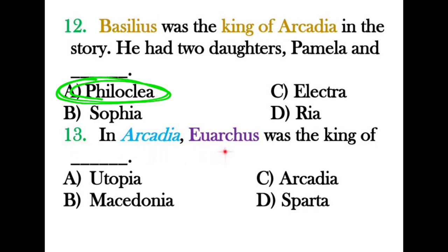Question thirteen: In Arcadia, Euarchus was the king of which place? The options include Utopia, Arcadia, Macedonia, and Sparta. Utopia was no real historical place — just an imaginary concept — and Basilius was already the king of Arcadia. The correct answer is Macedonia.